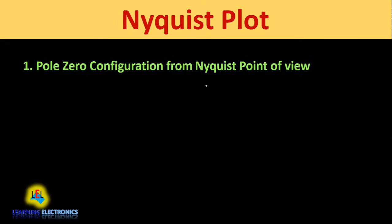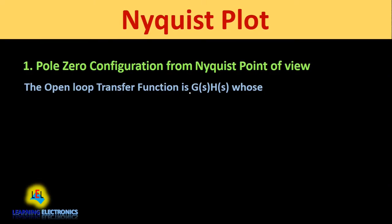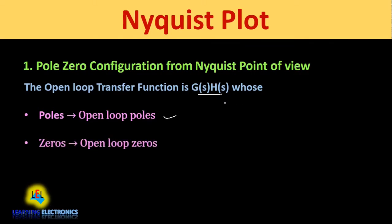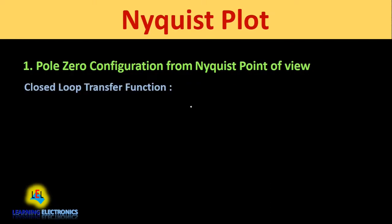Now we will discuss pole-zero configuration from the Nyquist point of view. We know that any function which can be expressed as a ratio of two polynomials has its own poles and zeros. When we talk about the control system, we can take the open loop transfer function G(s)H(s), whose poles are called as open loop poles and zeros from this transfer function are called as open loop zeros.